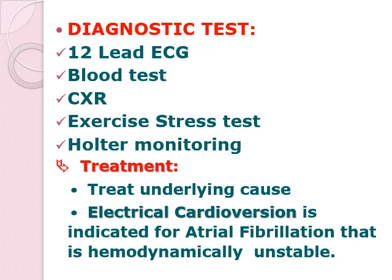Diagnostic tests include your ECG, blood tests, chest x-ray, exercise stress test, and Holter monitoring. For your blood test, since we are considering hypermetabolic state, we need your thyroid panel — TSH, T3, and T4. You would also want to check BUN and creatinine in case there are problems with renal functioning, and SGPT and SGOT in case there are problems with hepatic functioning. X-ray is used to evaluate pulmonary vasculature because pulmonary hypertension could possibly lead to atrial fibrillation. The exercise stress test is to exclude myocardial ischemia or reproduce exercise-induced atrial fibrillation.